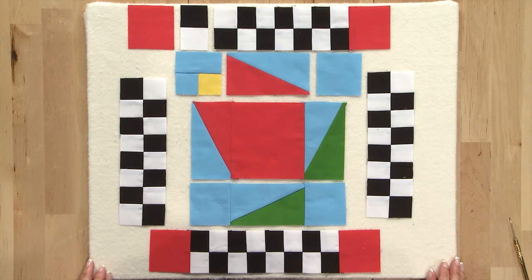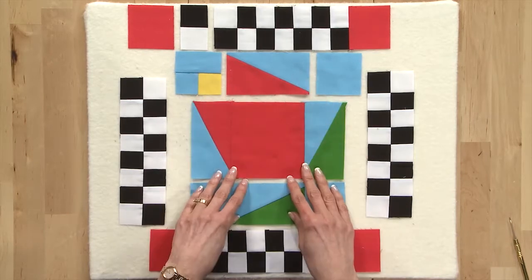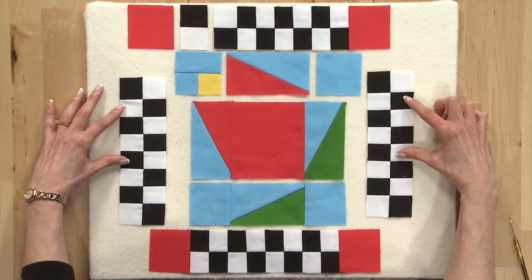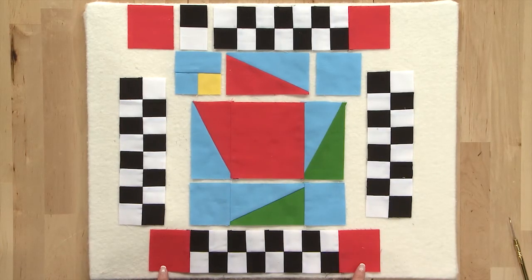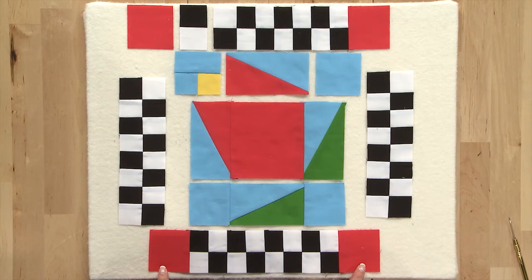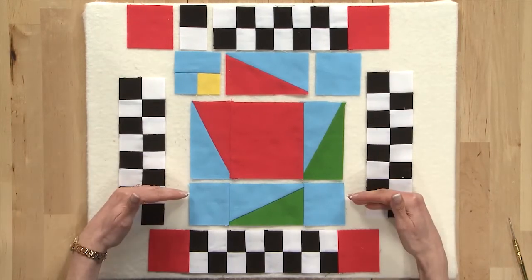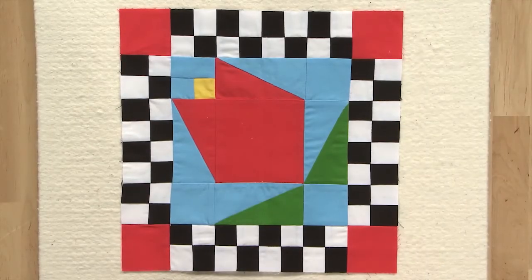Once your units are made here's how you assemble the block. You'll want to sew all the patches and units that are in the center together first. Then you'll take your checkerboard border on the sides, sew them to the center. You'll add these square patches to the end of the checkerboard for the top and bottom and then sew those to the center. And here is your finished block.